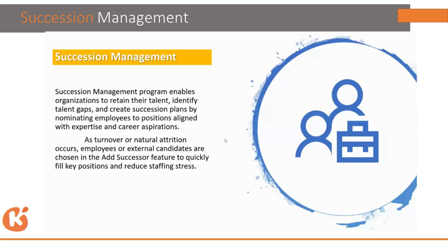Succession planning is basically a process of identifying the critical positions within your organization and developing an action plan for individual positions, assuming those positions are critical for the organization. It takes a holistic view of the current and future goals of the employee. Succession planning is majorly focused on critical positions.